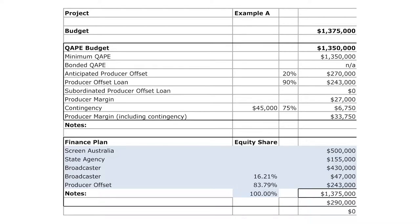In this finance plan, the keystone investor was the broadcaster — they were in first, in for a licence fee and also equity. Then Screen Australia came on board, the state agency, and then producer offset at 20%. The budget is $1.375 million, and your quake budget will always be lower because not everything in the budget is quakeable. Into the finance plan is 90% of the producer offset. Within that quake budget you don't have your contingency, so you've always got a buffer there.